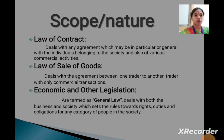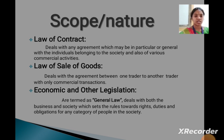Scope and Nature of Law: Law of Contract deals with any agreement which may be in particular or general, with the individual's wills belonging to the society and also various commercial activities. Law of Sale of Goods deals with the agreement between one trader to another trader with only commercial transactions.